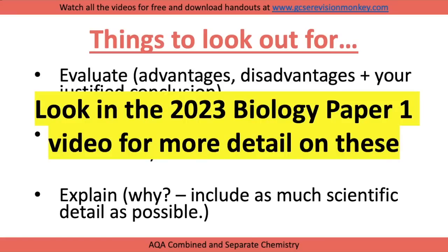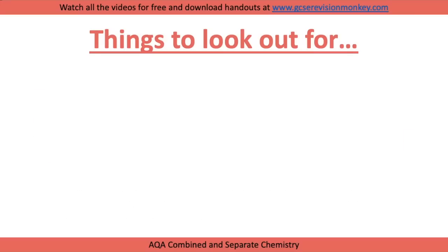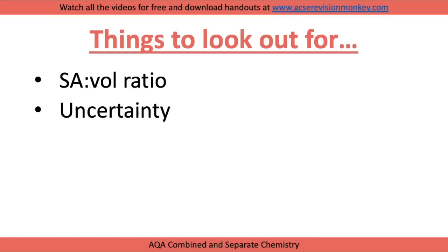If you need more details on this, look at the 2023 biology paper 1 video where I go over these in more detail. Other things to look out for: surface area to volume ratio relates to chemistry and could come up. Uncertainty — range divided by 2 — could come up as well.